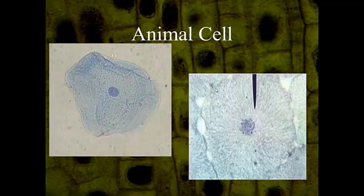When you look in the microscope for your cheek cell lab, you should see something like this — really just the nucleus, and you should be able to identify the cell membrane. We can't see a lot of the other organelles because we don't have strong enough microscopes.